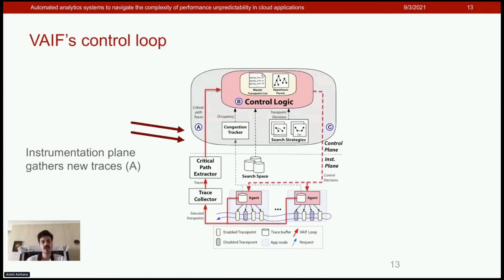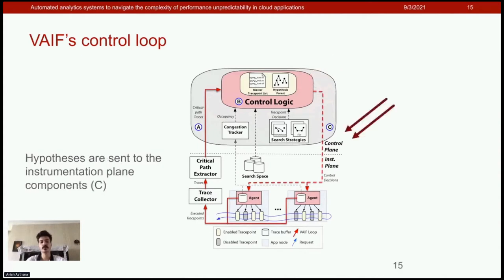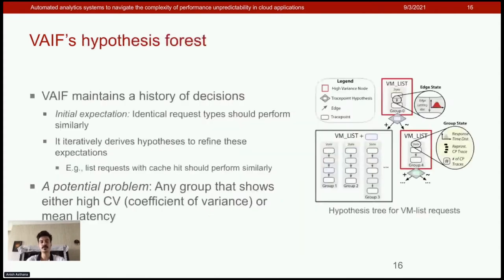VAIF operates in a continuous loop. At each iteration, VAIF's instrumentation plane components gather new traces, marked A. Control plane components then examine these traces to identify hypotheses of which trace points should be enabled next, marked B. Hypotheses are then sent to instrumentation plane components, marked C, which enable the relevant trace points, and the cycle repeats.